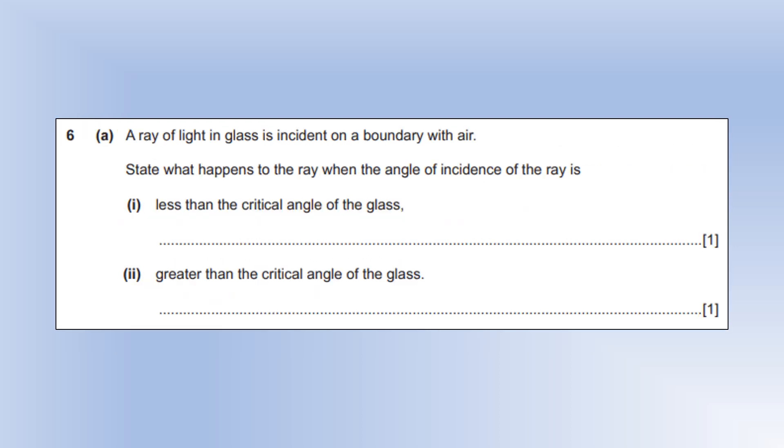A ray of light in glass is incident on a boundary with air. Say what happens to the ray when the angle of incidence is less than the critical angle of the glass. If it's less than the critical angle, it's just going to cross the boundary and bend away from the normal because it's going from glass into air. If it's greater than the critical angle, you're going to undergo total internal reflection because you're trying to go from high optical density to low and you're greater than the critical angle.